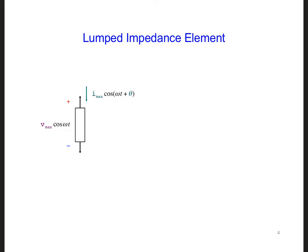To help answer this question, let's consider an AC current flowing through a lumped impedance element. There is a voltage drop across this impedance element due to the impedance.